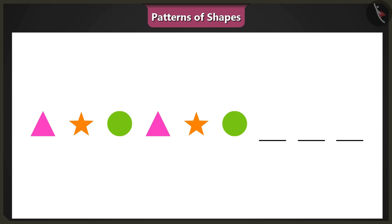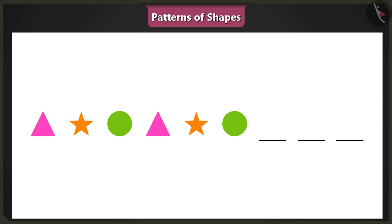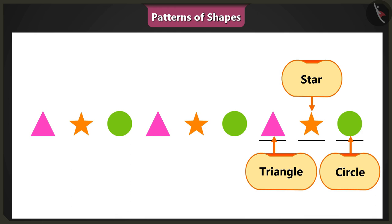Yes, you are right. In this pattern, a pink triangle is followed by an orange star and then appears a green circle. In this pattern, the next shape will be a pink triangle, then an orange star and then finally a green circle.